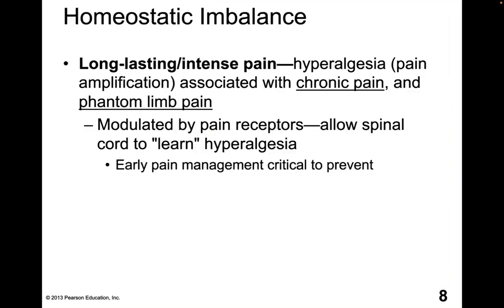We can get homeostatic imbalances related to pain. Long-lasting, intensive pain is known as hyperalgesia — pain amplification associated with chronic pain, and even phantom limb pain after amputation. The pain receptors modulate and allow the spinal cord to essentially learn this pain amplification process, which is why it's so important to manage pain at early stages to reduce the likelihood it will turn into chronic pain.